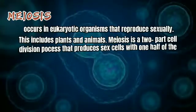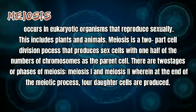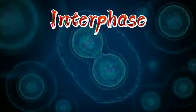But before that, what is meiosis? Meiosis occurs in eukaryotic organisms that reproduce sexually. This includes plants and animals. Meiosis is a two-part cell division process that produces sex cells with one half the number of chromosomes as the parent cell. There are two stages or phases of meiosis: meiosis 1 and meiosis 2, wherein at the end of the meiotic process, four daughter cells are produced. However, before a dividing cell enters meiosis, it undergoes a period of growth called interphase.